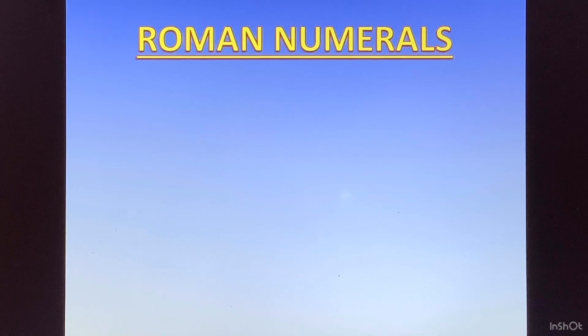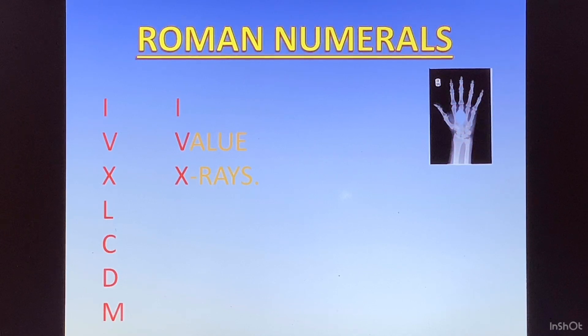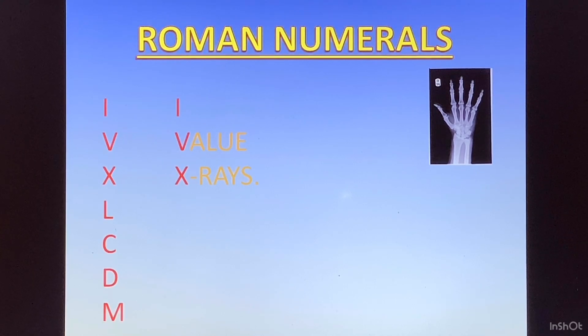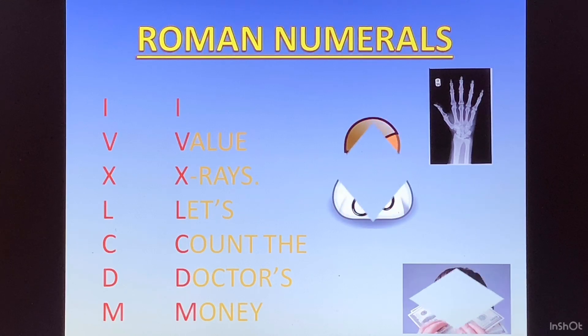Now a trick to remember these Roman numerals in order: I V X L C D M. To remember them in order, I value X-rays. So this takes care of the first three Roman numerals. The second part is let's count the doctor's money. So if you remember these two statements you will learn the order also. I value X-rays. Let's count the doctor's money.